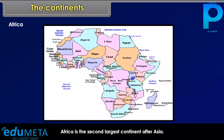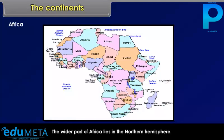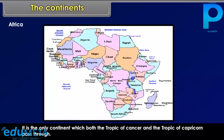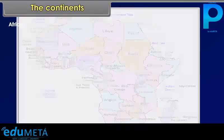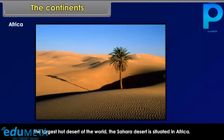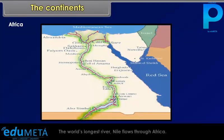Africa is the second largest continent after Asia. The Equator runs almost through the middle of this continent, and the wider part of Africa lies in the Northern Hemisphere. It is the only continent through which both the Tropic of Cancer and the Tropic of Capricorn pass. The continent is bound on all sides by oceans and seas. The largest hot desert of the world, the Sahara Desert, is situated in Africa, and the world's longest river, the Nile, flows through Africa.